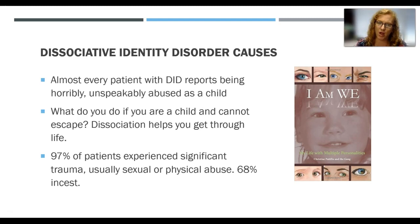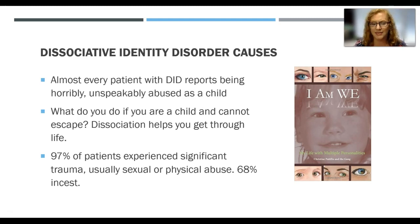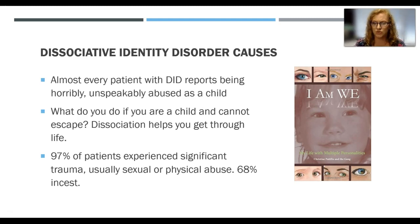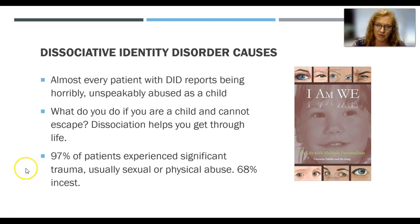What causes DID? Almost every patient with DID reports being horribly, unspeakably abused as a child. Think about it — what do you do if you're a child and cannot escape? Dissociation would help you get through that. Research indicates that children older than about seven, eight, or nine typically don't develop DID if horribly abused — they're too old, and somehow dissociation doesn't work as effectively as an escape mechanism. 97% of patients with DID experience significant trauma, usually sexual or physical abuse, and 68% experienced incest. It's really quite a traumatic thing to learn about and to experience.